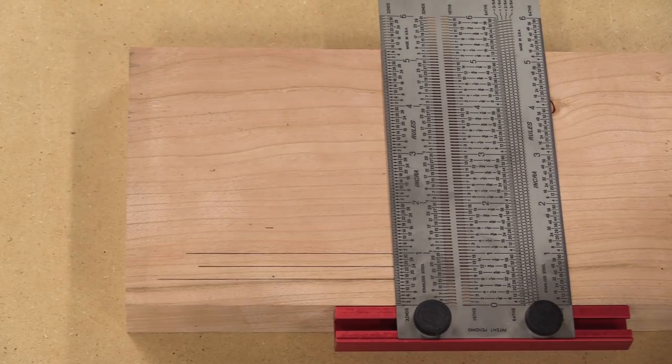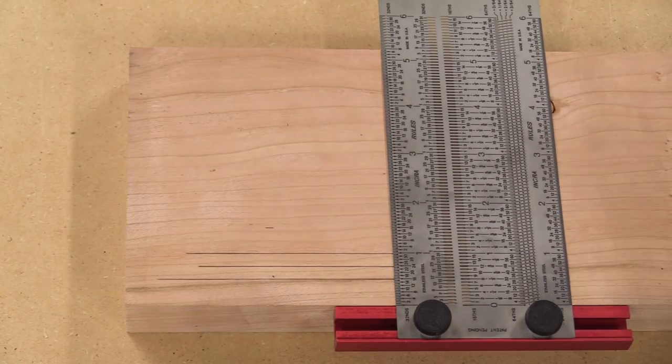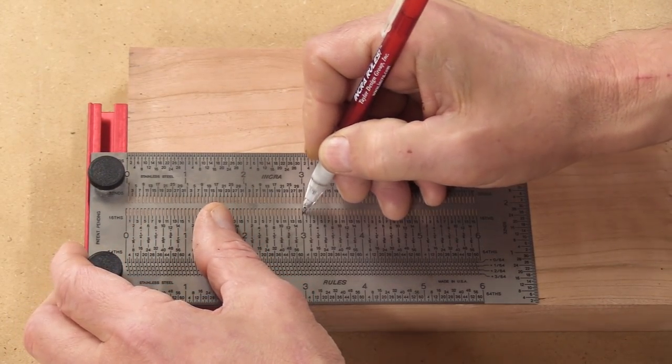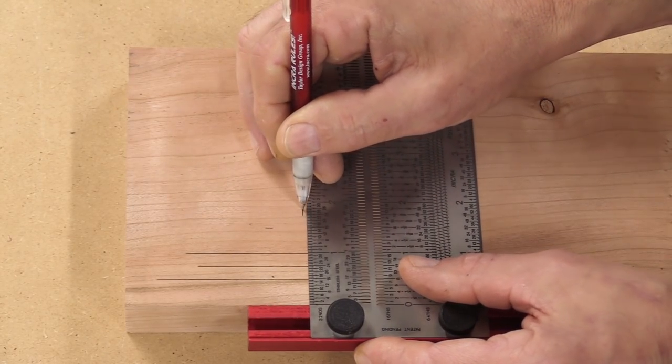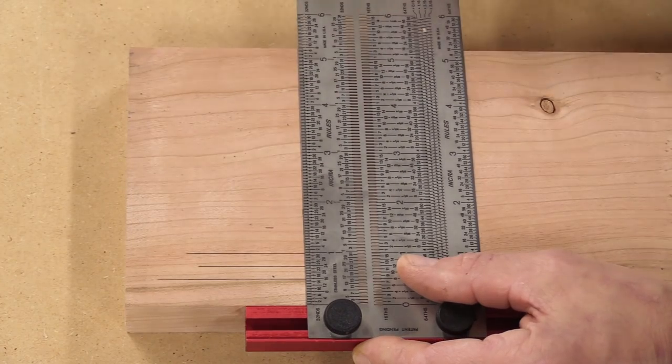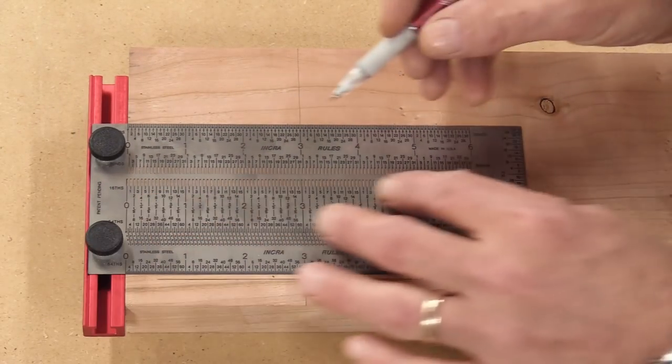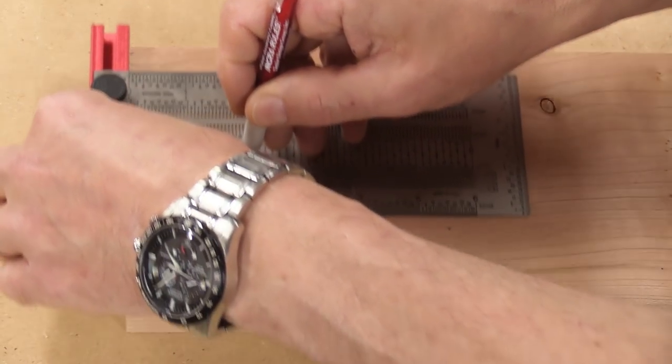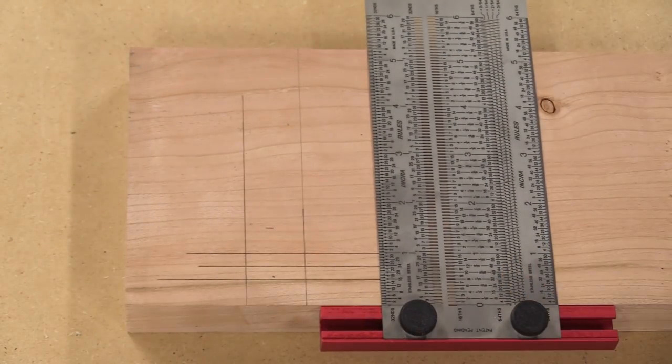This is also an incredibly accurate square. Let's say I need to make a line going this way three inches down. All I need to do is make a mark here at three inches, and there you go. I can also take this and just mark down let's say two inches, and go across this way. That would accomplish the same thing.